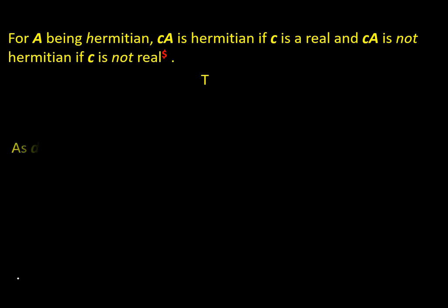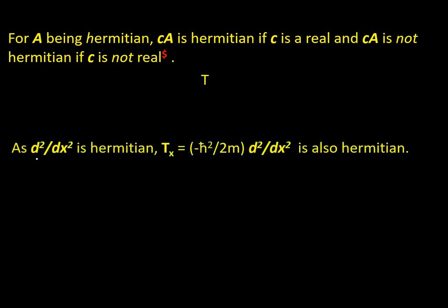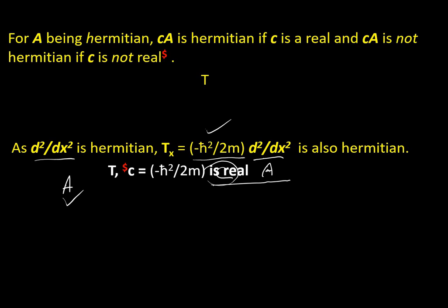Next question: d²/dx² is Hermitian, so is the kinetic energy operator T_x = −ℏ²/2m · d²/dx² also Hermitian? Here c = −ℏ²/2m and a = d²/dx². Since c is Hermitian and c = −ℏ²/2m is real, T_x is also Hermitian. The statement is TRUE.